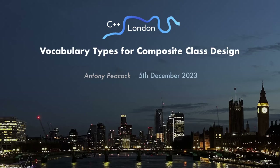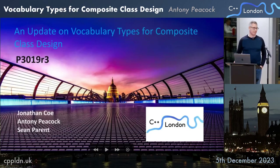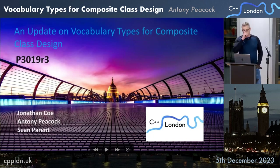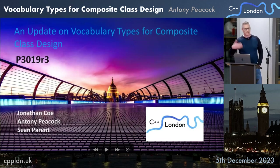This is a topic that's been talked about at C++ con and here at C++ London before. I'm going to be talking about vocabulary types for composite class design. A couple of months ago, we released a new paper, P3019. This is the amalgamation of two different papers that previously existed for two types called indirect value and polymorphic value. I'm basically going to be talking about how the design has changed.